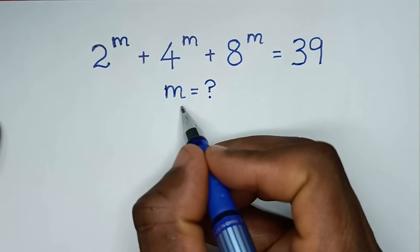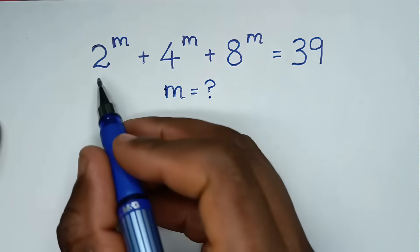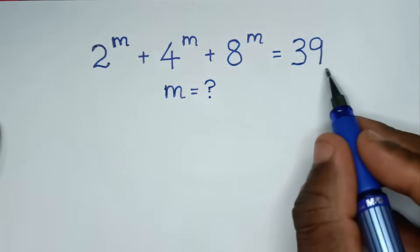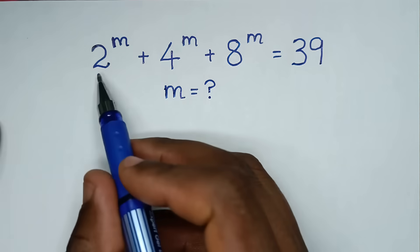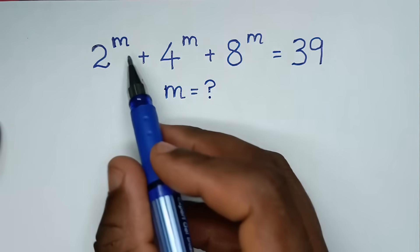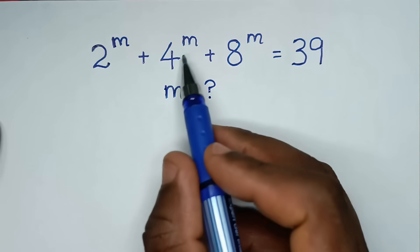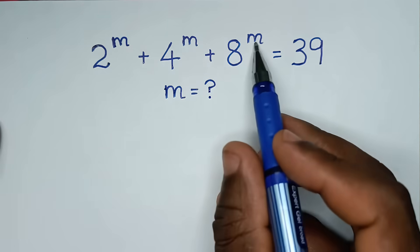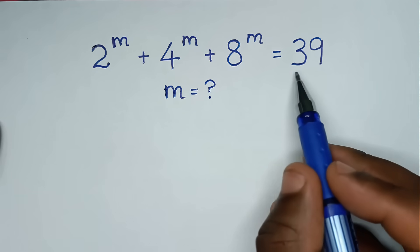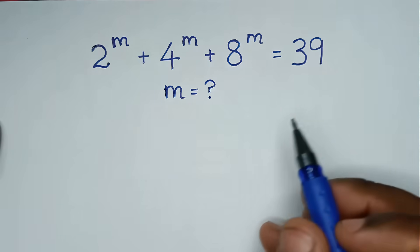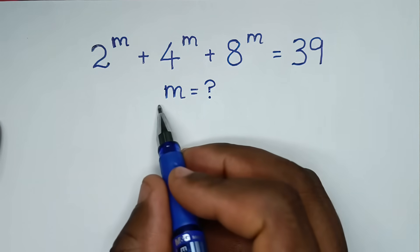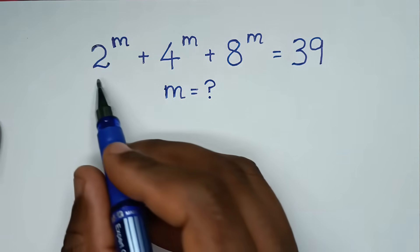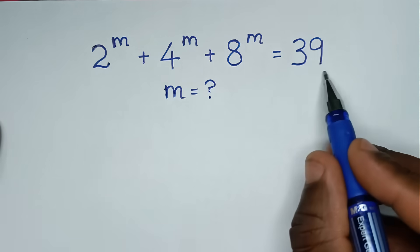Hello, you are welcome to solve this math problem, which is 2 power of m plus 4 power of m plus 8 power of m is equal to 39. We need to find the value of m from this equation.